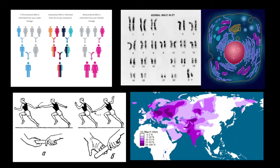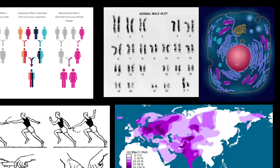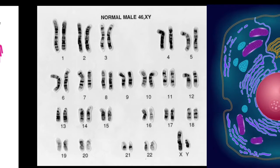First of all, 'haplo' means one. If we take a look at this karyotype — a human karyotype — we have 23 pairs of chromosomes. All these chromosomes we call autosomes, and these chromosomes we call sex chromosomes, which are the X chromosome and the Y chromosome.